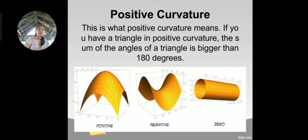Positive curvature - this is what positive curvature means. If you have a triangle in positive curvature, the sum of the angles of a triangle is bigger than 180 degrees. You see in the first box, we have a positive there. Second is negative. Third is zero.